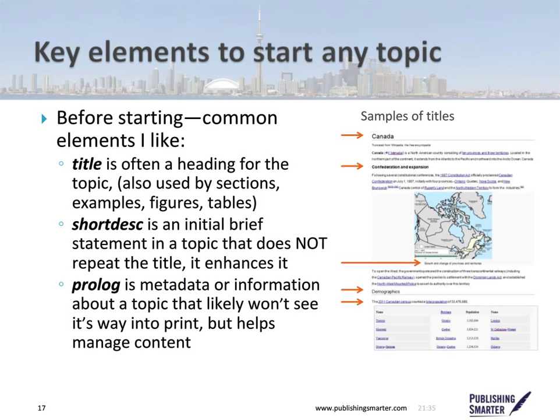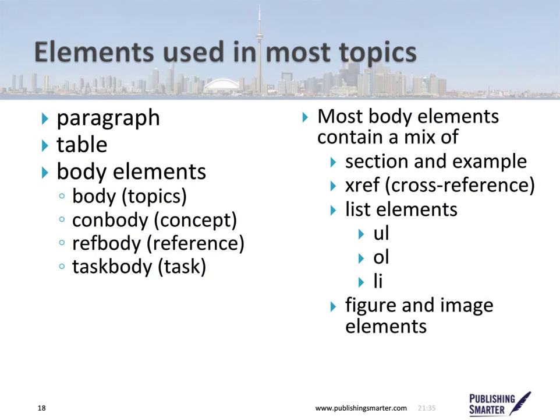There are also many elements you'll probably use frequently. Paragraphs and tables are common, and inside the different types of topics you have the body — a general body, a concept body (con body), a reference body (ref body), and the task body. Most body elements will have a mix of things like sections and examples. You might also have cross-references, lists — made up of unordered lists, ordered lists, and list items — and figures and images. A lot of things you're already familiar with. DITA supports all of these.